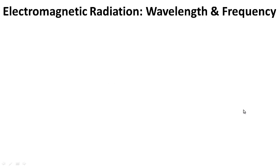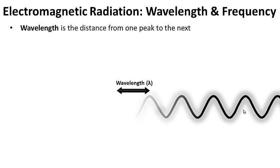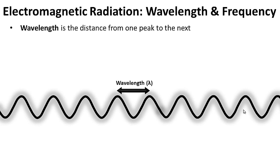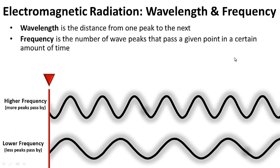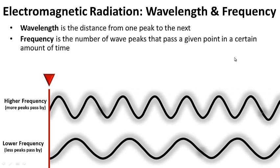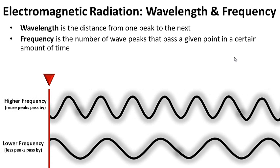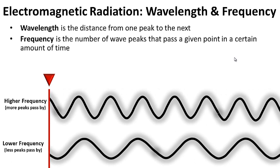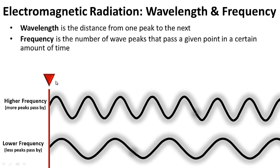Electromagnetic radiation, wavelength, and frequency. Wavelength is the distance from one peak to the next — from peak to peak, that is the wavelength distance. Frequency is the number of wave peaks that pass a given point in a certain amount of time.